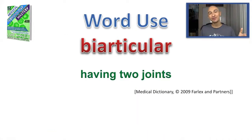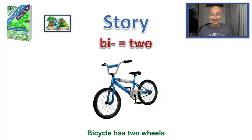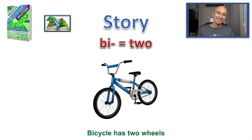Bi means two. A word used for that is biarticular, which means having two joints. My story for that is: a bicycle has two wheels. That's pretty easy, right? Bi — bicycle — two wheels.